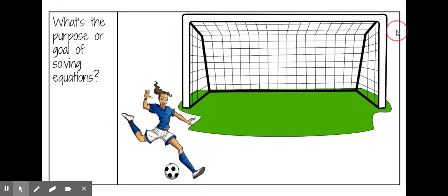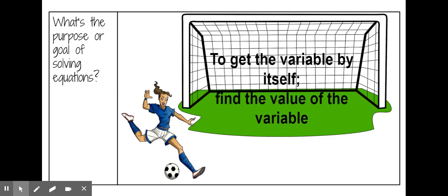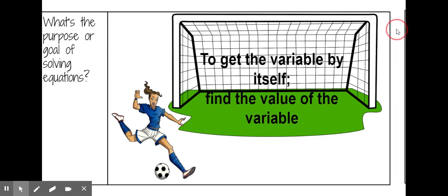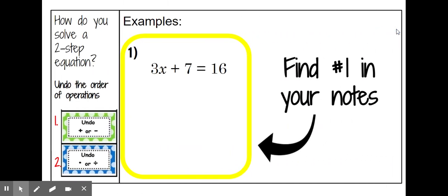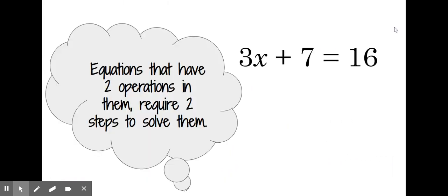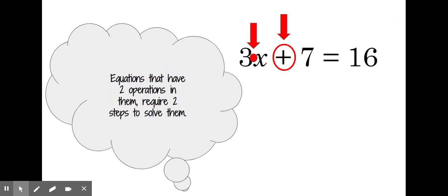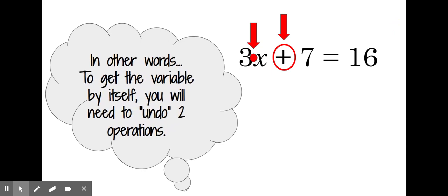When we're solving equations, our goal is to get the variable by itself to find its value. Please find example number one in your notes. Equations that have two operations in them require two steps to solve them. In this case, we see multiply and add. To get the variable by itself, you will need to undo two operations.